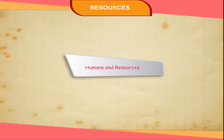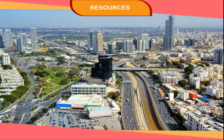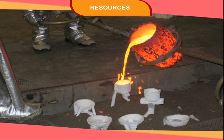Sometimes natural substances become resources when their original form has been changed. Iron ore was not a resource until people learned to extract iron from it. People use natural resources to make buildings, bridges, machinery, etc., which are known as human-made resources. Using resources carefully and giving them time to get renewed is called resource conservation. Balancing the need to use resources and also conserve them for the future is called sustainable development.